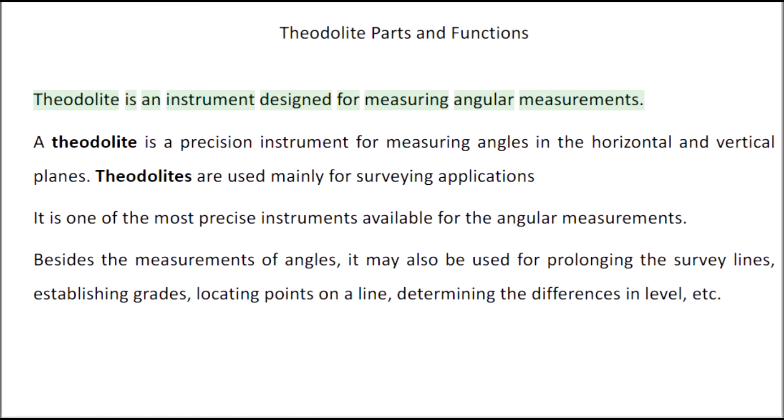Theodolite is an instrument designed for measuring angular measurements. It is a precision instrument for measuring angles in the horizontal and vertical planes. Theodolites are used mainly for surveying applications and are one of the most precise instruments available for angular measurements.